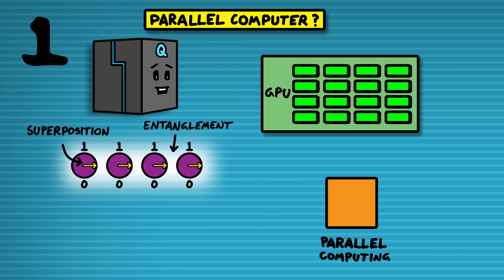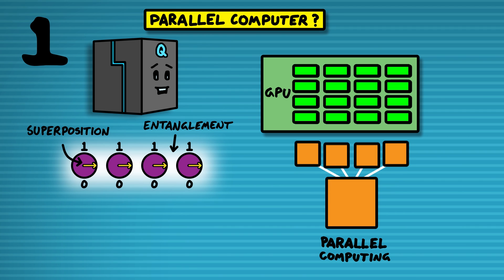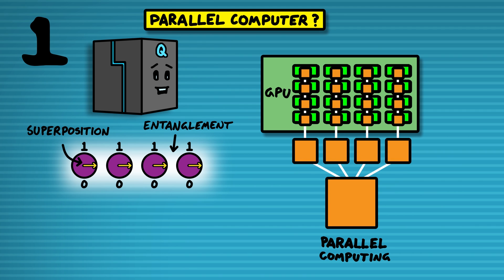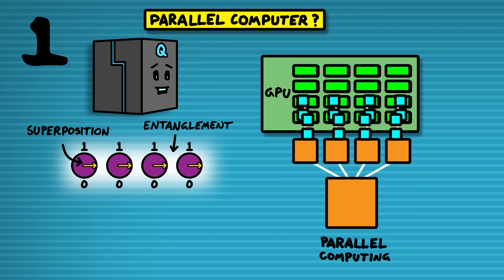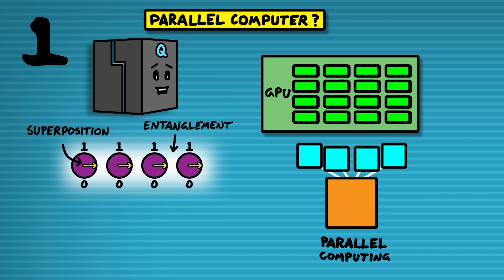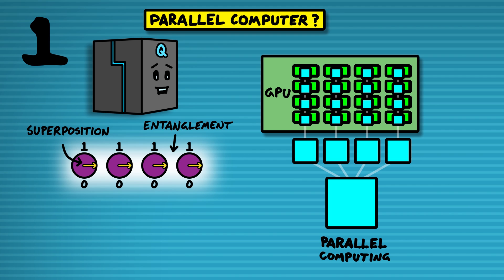Parallel computing deals with breaking down large problems into small chunks which can each be solved on a processor before the whole thing is recombined. But the architecture is very different to quantum computers. In a parallel computer you've got many different independent processes running at the same time, rather than an entangled state, and you can read out any of the states of any of the processes at any time you like.